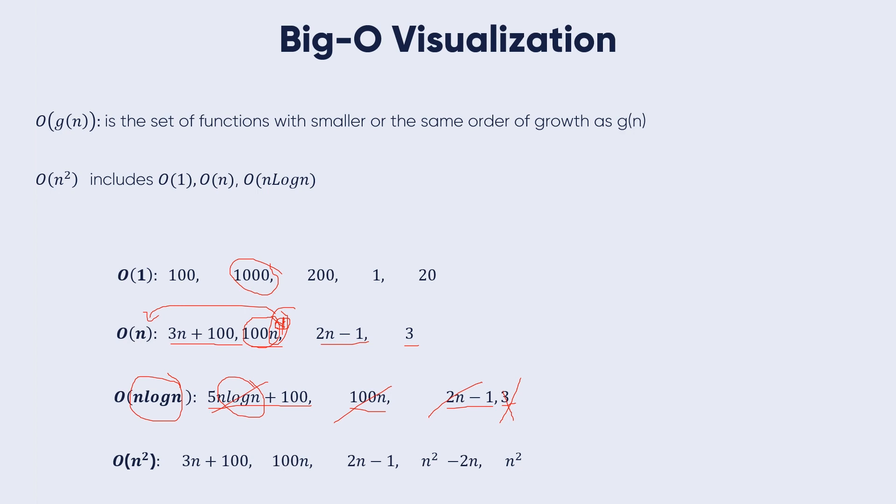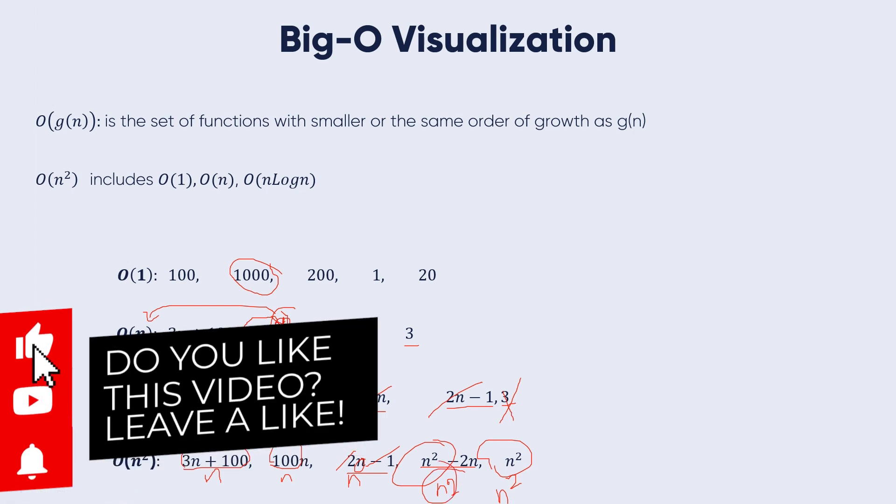O(n²): if we have numbers and we need to get the complexity and the highest degree of them - 3n + 100 we have n, 100n we have n, 2n - 1 we have n, so we neglect these and keep the greatest order. n² - 2 so we have n², and n² here alone, so the greatest one among these is n² so we take it as its Big O notation.